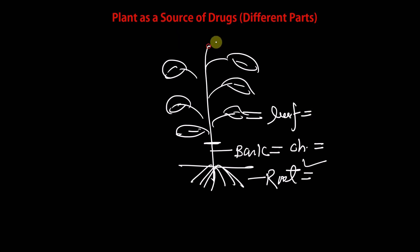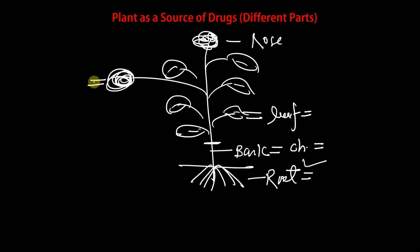The next plant part is the flower. For example, the rose flower gives us rose water, which is used in the preparation of many cosmetics. From the fruit, we can derive many drugs — for example, morphine or opium is derived from fruit and is used as a potent analgesic. Likewise, many parts of a plant offer different advantages as sources of drugs.